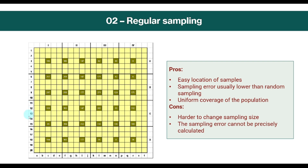The next method is regular sampling, and with this figure you can already intuit what this method consists of. Here we have a grid of different rows and columns where we distribute the different samples. The pros include easy location of samples, sampling error is usually lower than in random sampling, and we have a uniform coverage of the population, since we are selecting samples that are equidistant from each other.